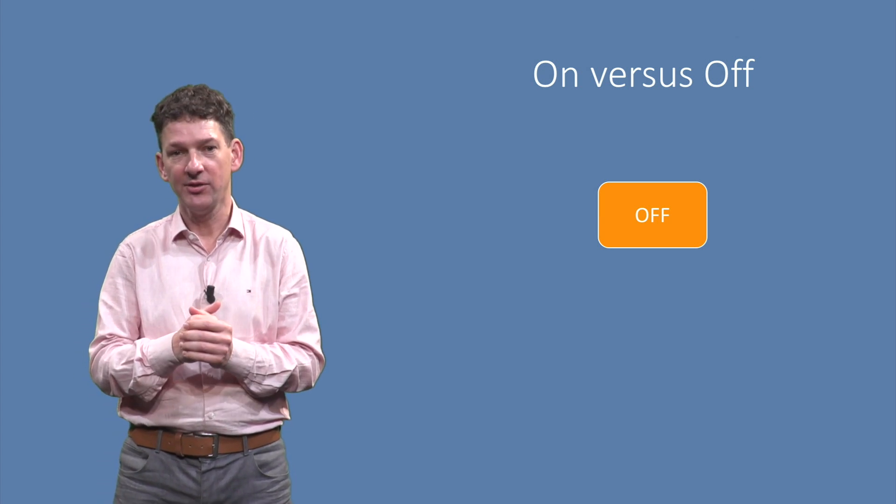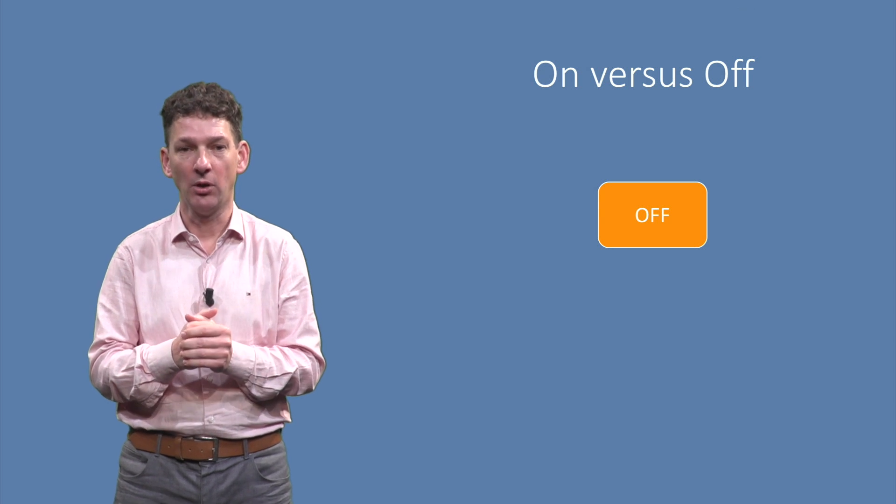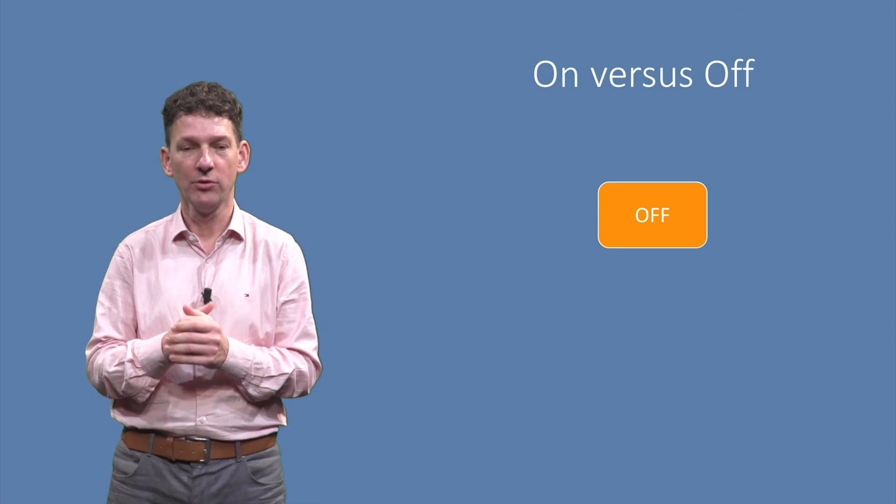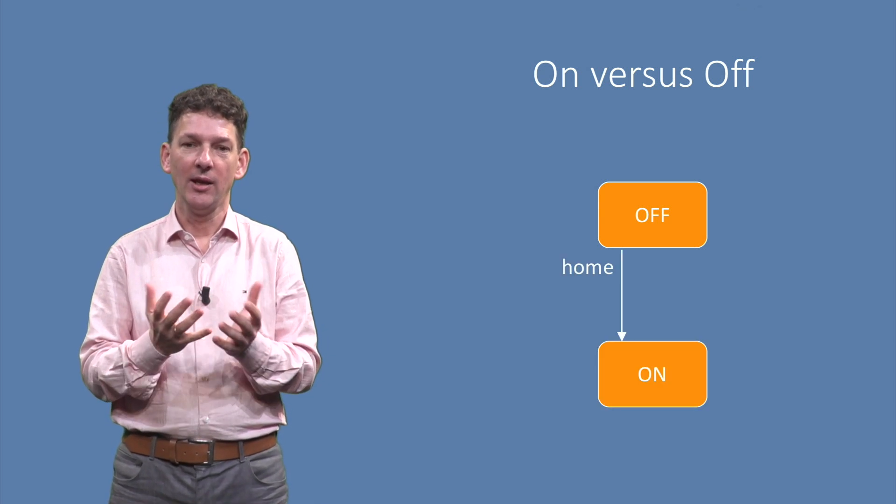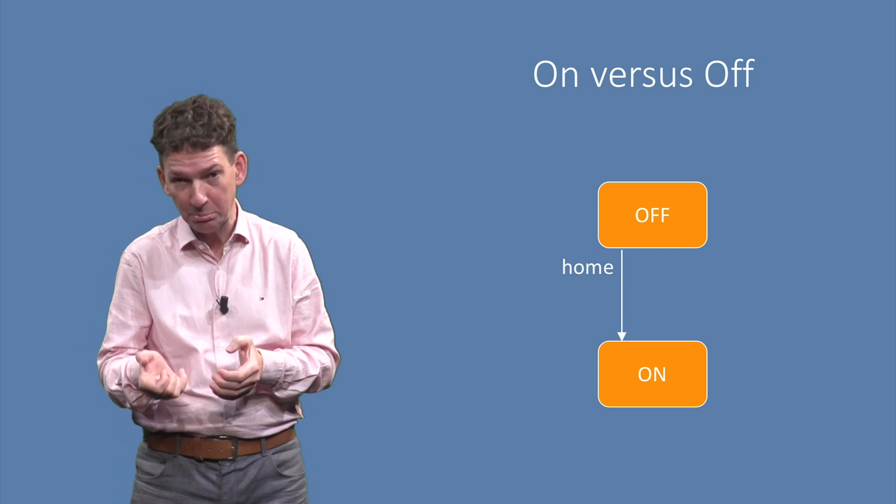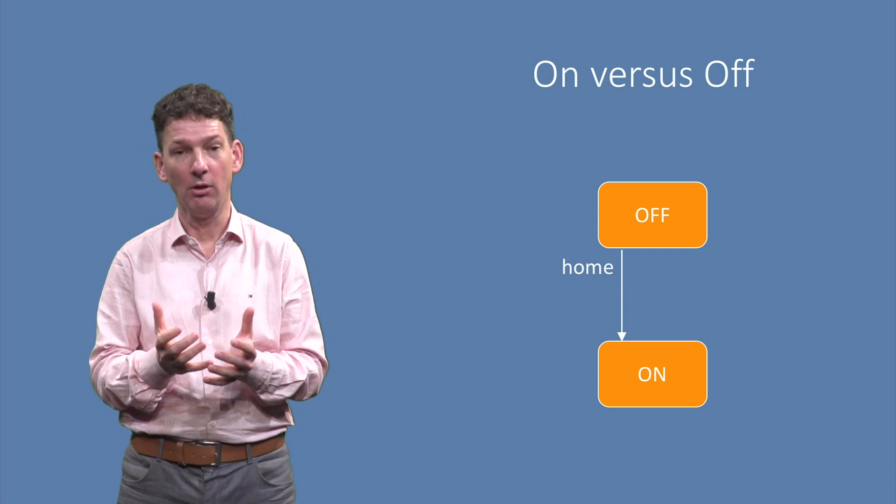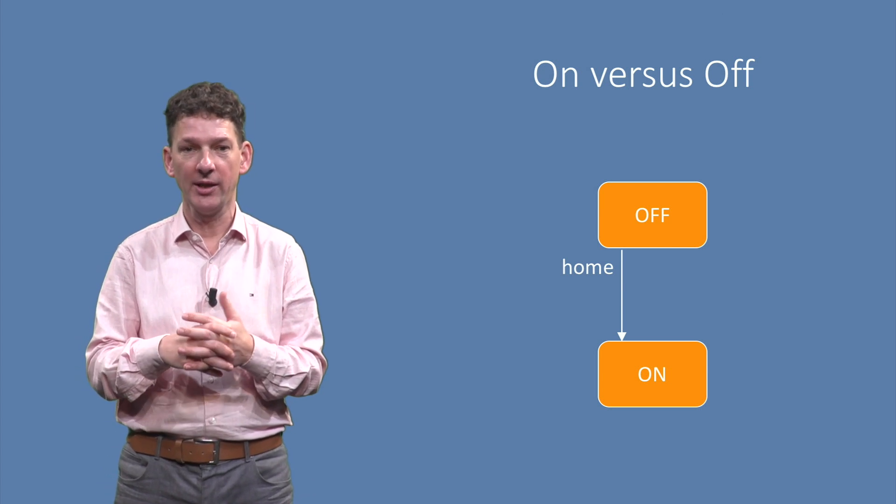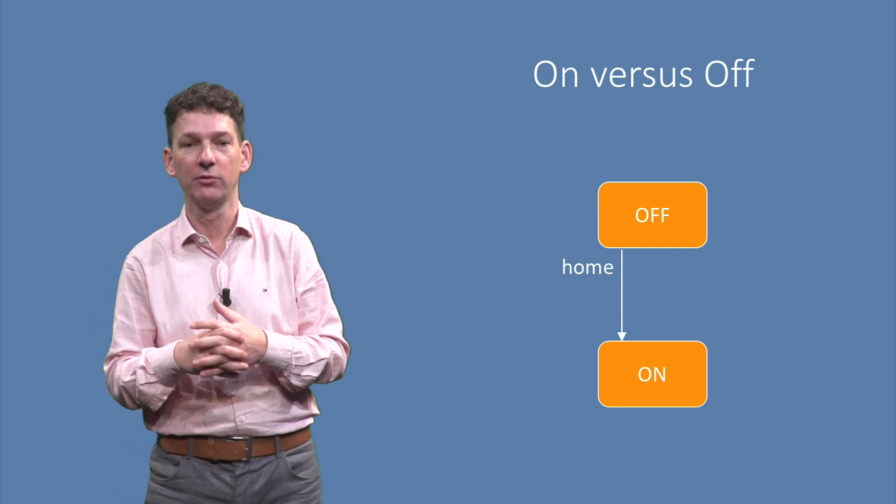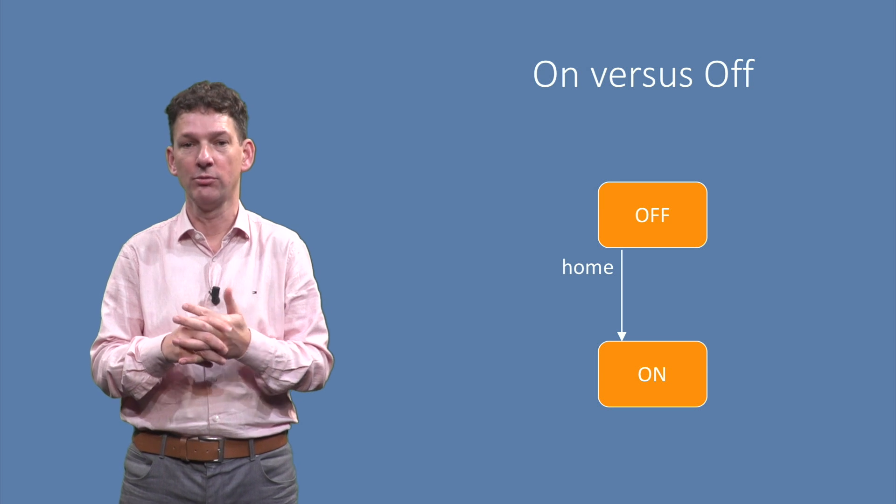Here we see a state in the orange box labelled off. It represents a phone switched off. If we switch it on using the home button, we enter a state labelled on. We see a new orange state, as well as a transition from the off to the on state, shown as an arrow.